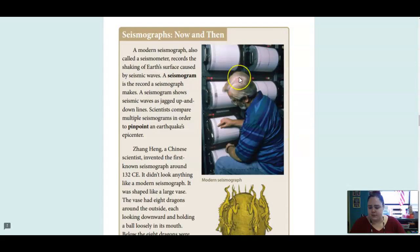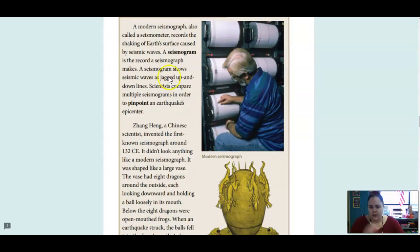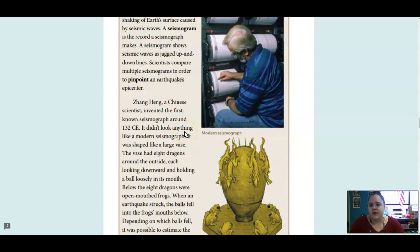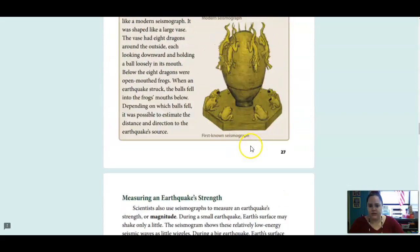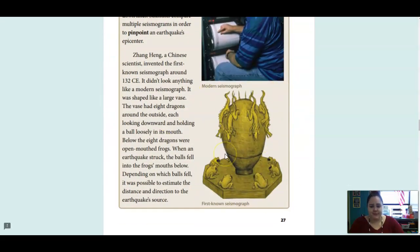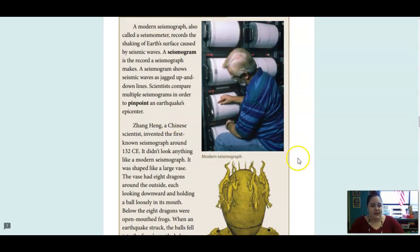Alright, this is talking about seismographs now and then. So, we have modern seismographs, which record the shaking of Earth's surface caused by seismic waves. A seismogram is the record a seismograph makes. And it shows jagged up and down lines. Scientists compare multiple seismographs in order to pinpoint an earthquake's epicenter. So, they use more than one just to make sure they know exactly where it is. And this is an older version. This was around 132 CE. It looks nothing like a modern seismograph. It was not as accurate and not as high-tech as the ones we have today. So, the ones we have today are much more accurate. We can pinpoint exactly where the earthquake started.